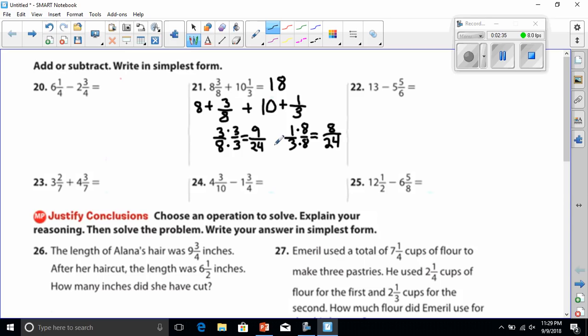Now we have the two like fractions: 9 over 24 plus 8 over 24. And as we can see, 9 plus 8 is going to equal 17. So the answer equals 17 over 24. Remember, that was just the fractions that we did there. The whole number is up here. We have to bring this fraction up here with the whole number in order to get our final answer. So our final answer would be 18 and 17/24. And that will be our answer for number 21.